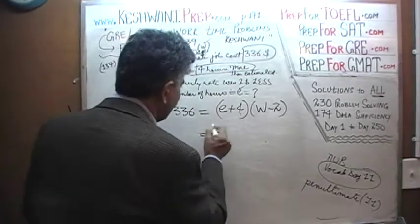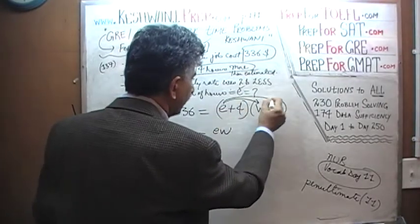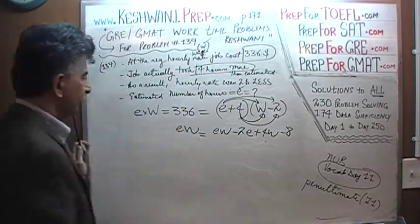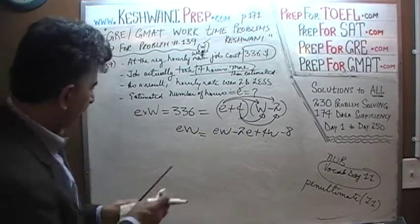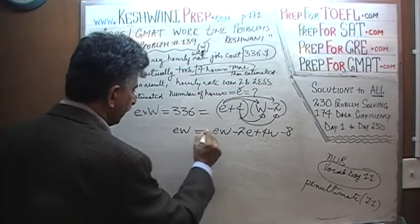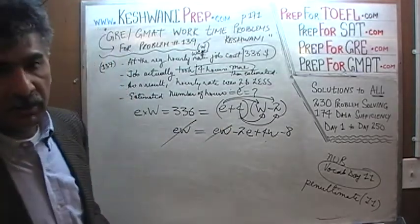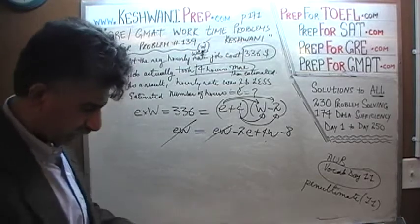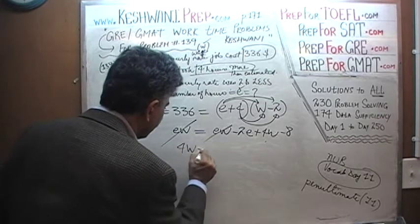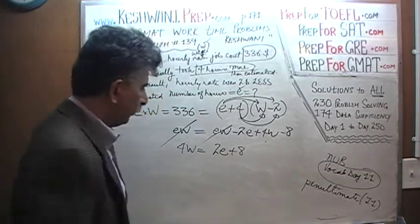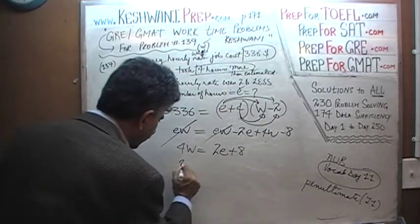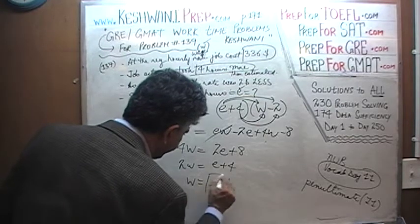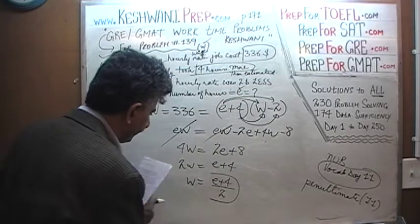Now let's expand. E times W is EW. E times negative 2 is negative 2E. 4 times W is 4W. And 4 times negative 2 is negative 8. E times W appears on both sides, so we can subtract EW from both sides and get rid of it. What we are left with is 4W minus 2E minus 8 equals 0, so 4W equals 2E plus 8. Dividing the whole thing by 2 gives us 2W equals E plus 4, which means W equals E plus 4 over 2.